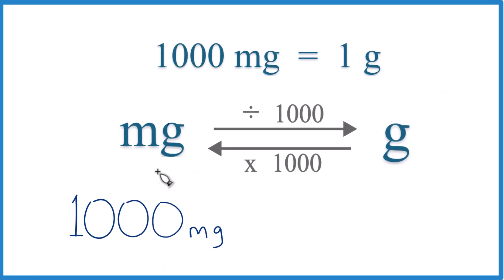So let's take a look here. We're going to convert 1,000 milligrams to grams. And this is kind of a special one because our conversion factor says that 1,000 milligrams equals 1 gram. So that's pretty much it. 1,000 milligrams, that equals 1 gram.